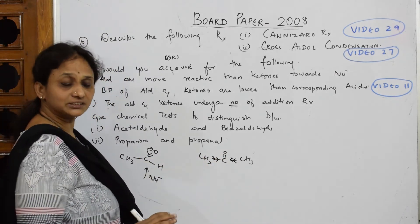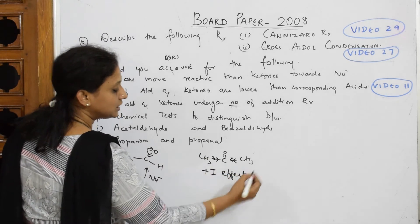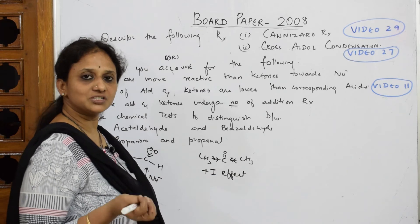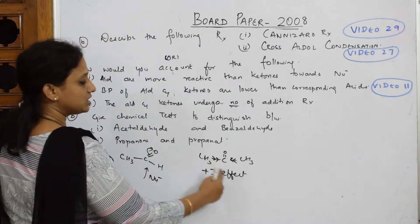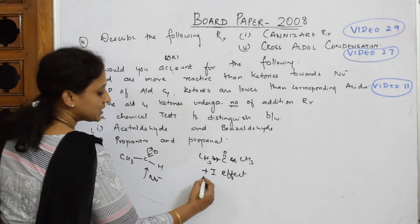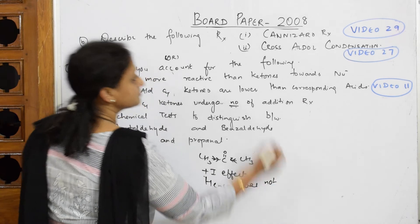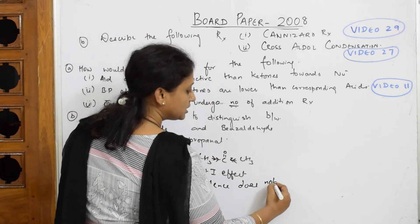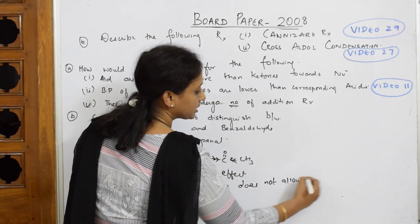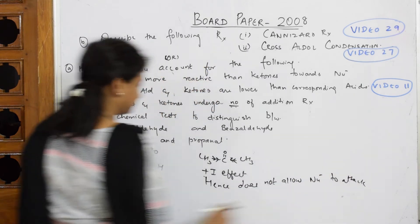Then the nucleophile can easily come and attack because of this electronegative oxygen. But here what happens? This is your alkyl group, electron donating group. It keeps on donating electrons. So what effect does it show? +I effect. Hence it does not allow nucleophile to attack.